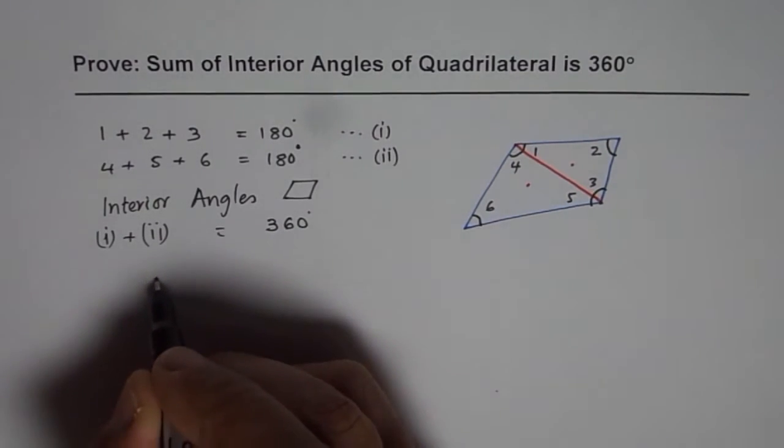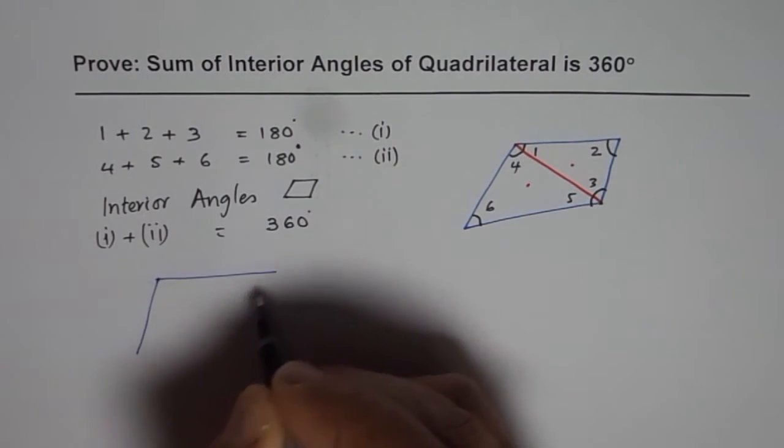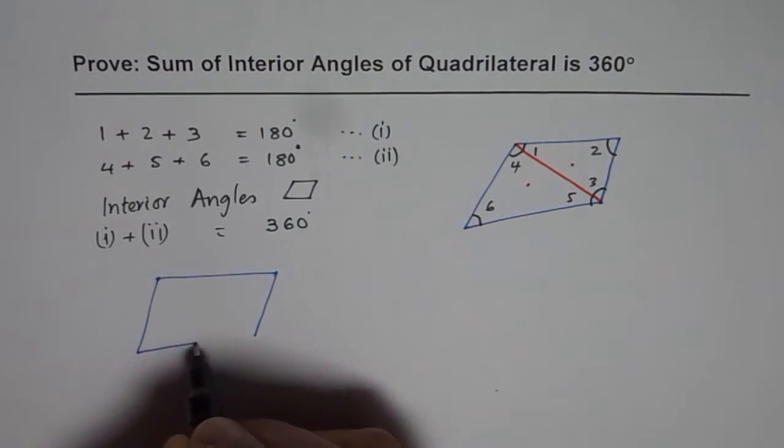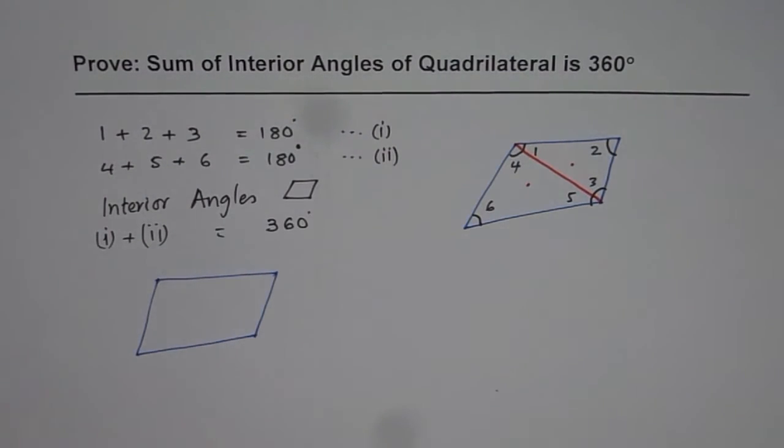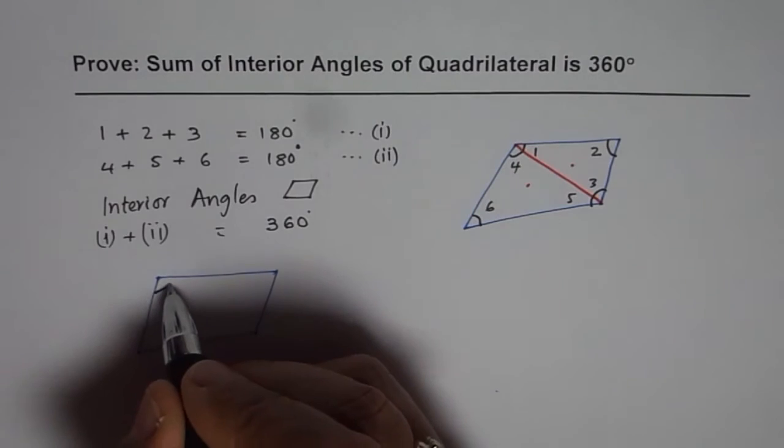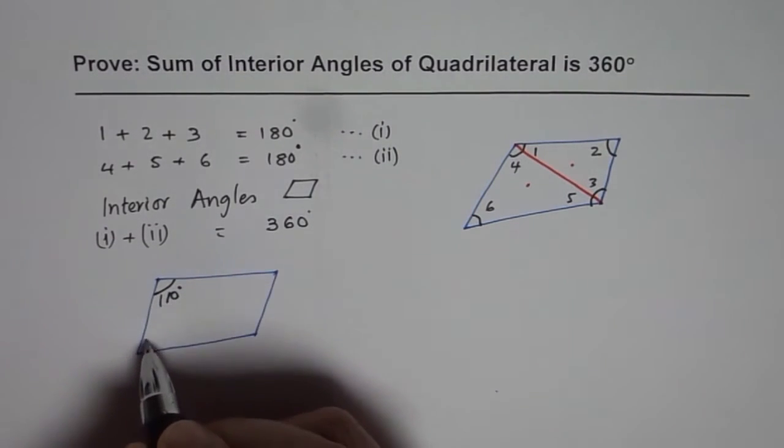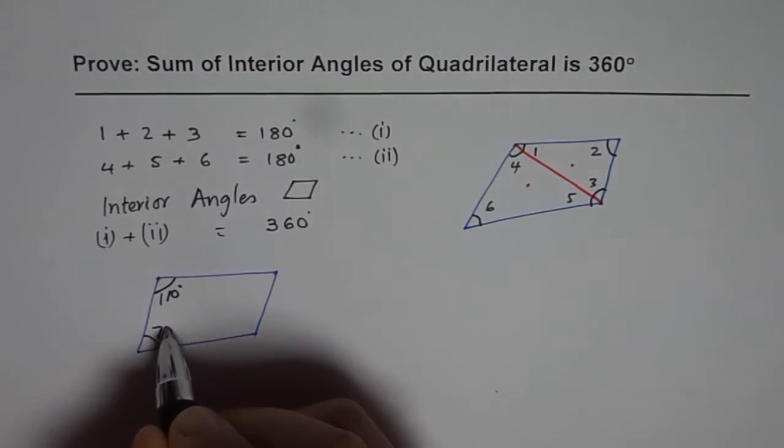Now, here's an exercise for you. Let's say that is a quadrilateral. So I'll write down three angles in it, you'll find the fourth angle. So let's say this is 110 degrees. This is 70 degrees.